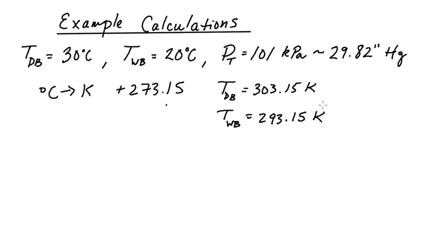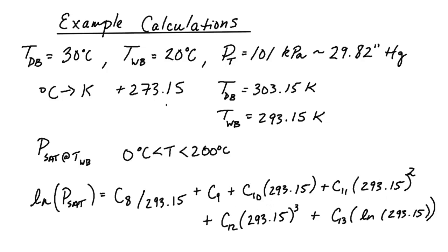The first order of business is to calculate the saturation pressure at the wet bulb temperature. We are in the range from 0 degrees C to 200 degrees C and so we have this very long equation with some polynomial terms and a natural log term. I'm going to write that out quickly for you so that we can see all the numbers in places.